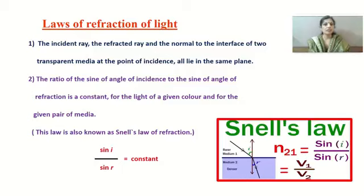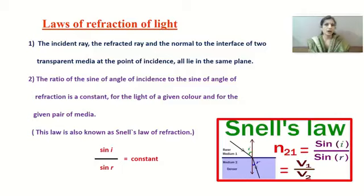This ratio is constant for light of a given color and for a given pair of media. This is also called Snell's Law: sine i upon sine r is equal to a constant.